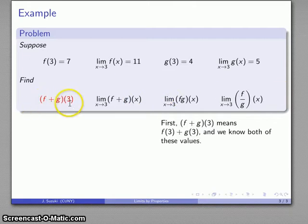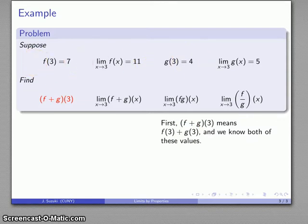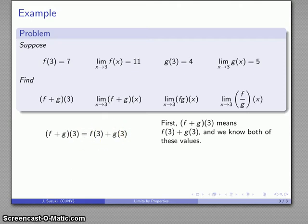Let's start off with finding f plus g of 3. Remember, this notation means f of 3 plus g of 3, and it turns out I know both of those values — here's f of 3, here's g of 3. So f plus g of 3 equals f of 3 plus g of 3, and substituting those values in, that equals 11. This is really a pre-calculus problem but it's a warm-up to what we're doing.